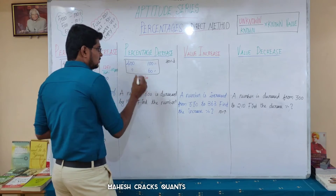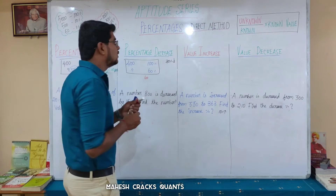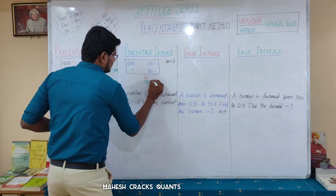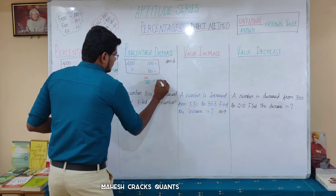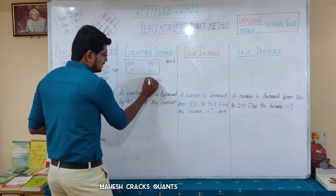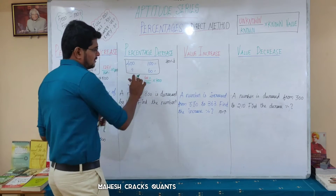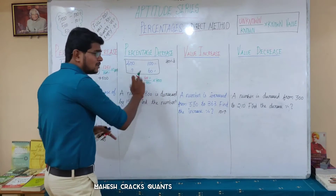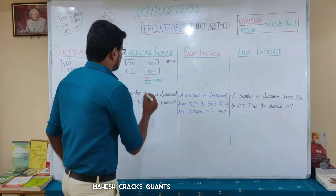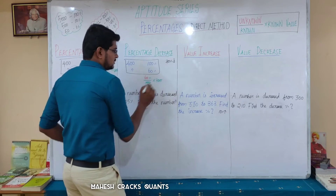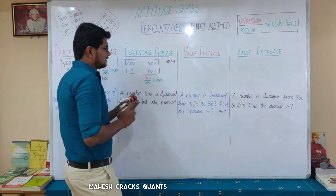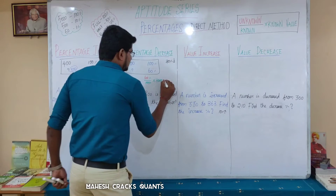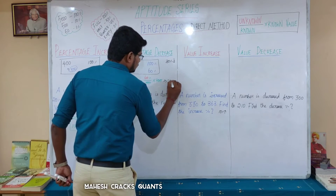The decreased percentage is 60. The original value is 100%. 100% value means 400. So 60 into 4 equals 240. That's the answer — after a 40% decrease from 400, the result is 240.